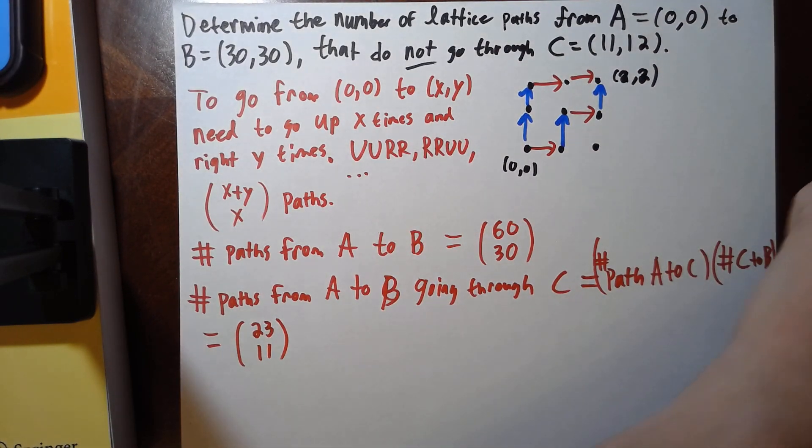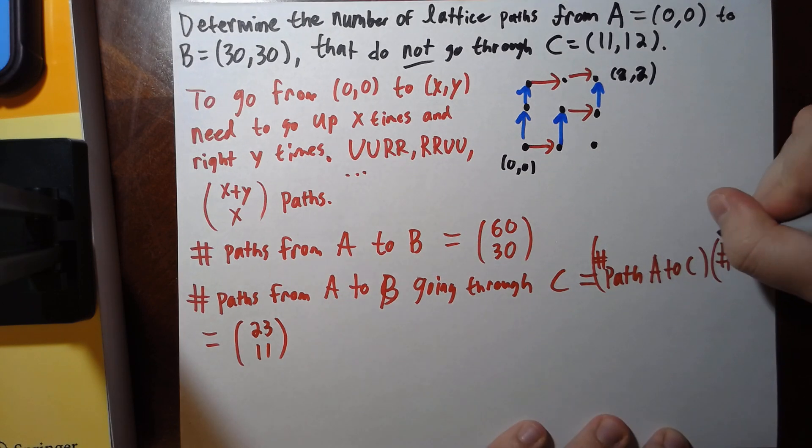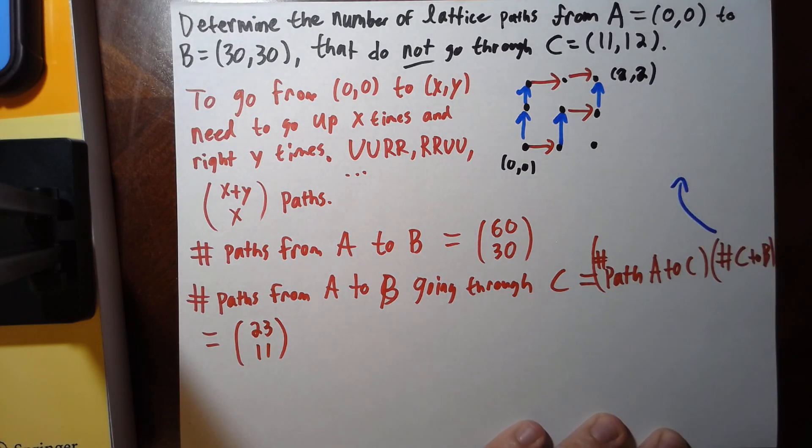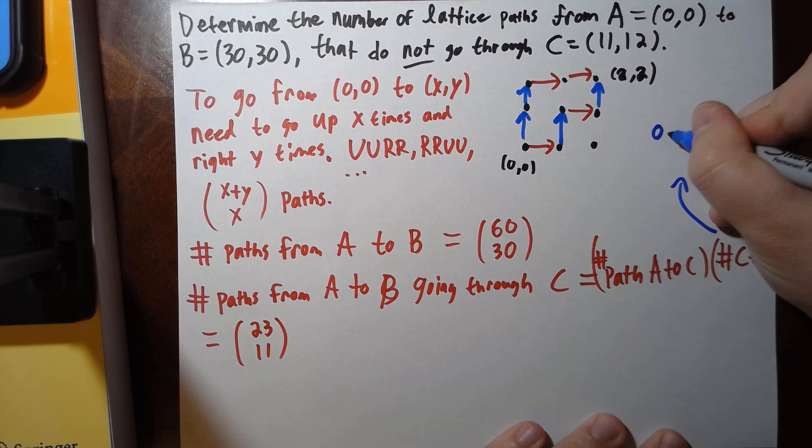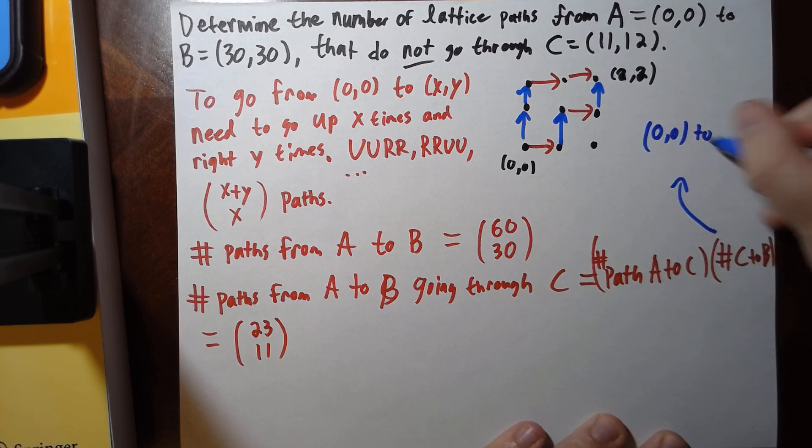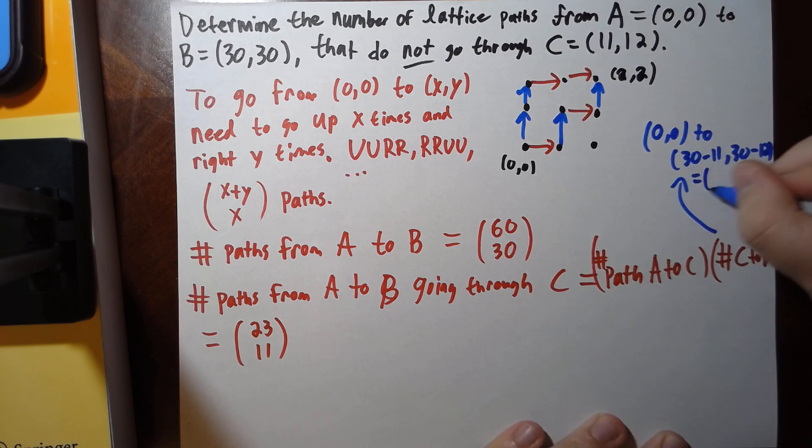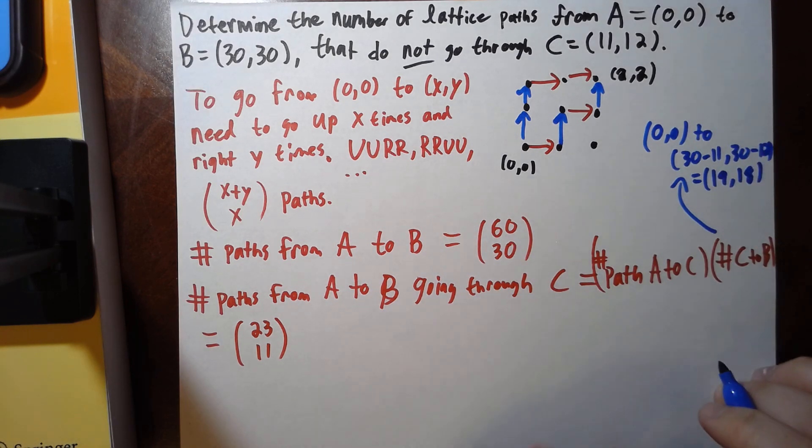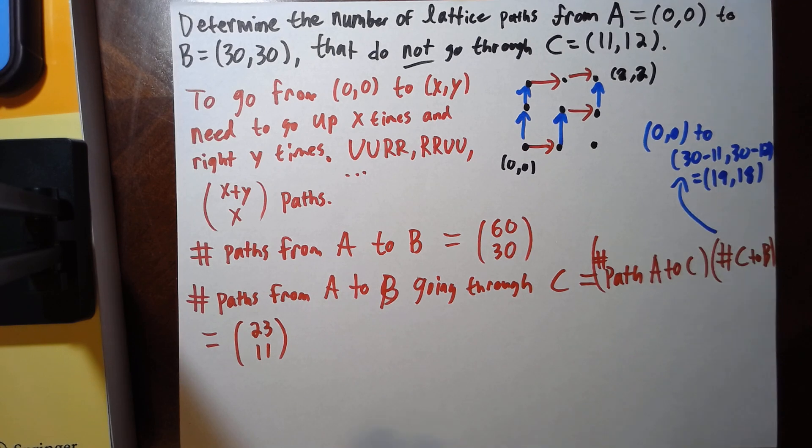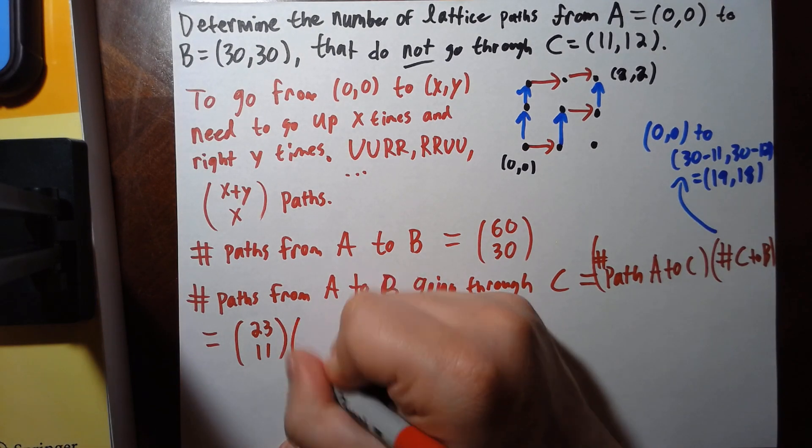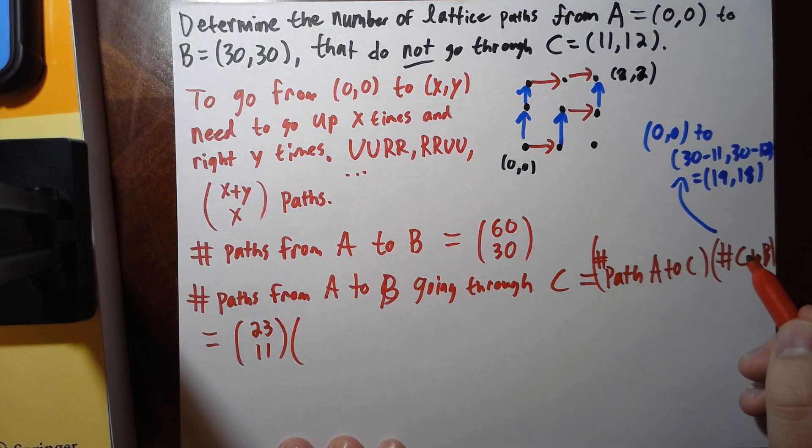And for C to B, let me just say that's going to be—okay, we can shift this to the origin. So this is the same as going from (0,0) to (30 minus 11, 30 minus 12), which is (19, 18). So in that case, we're going to have—what's 19 plus 18?—that's going to be (37 choose 19).